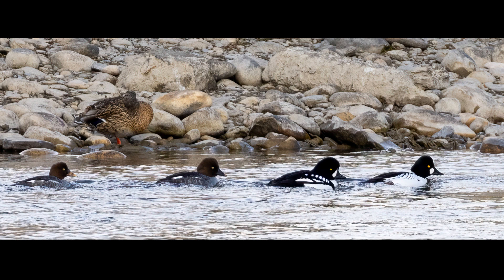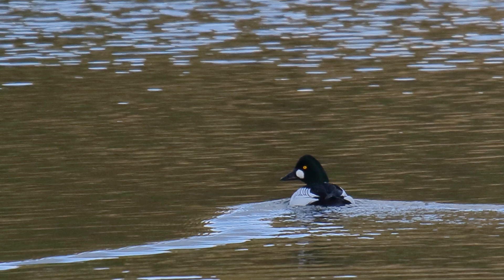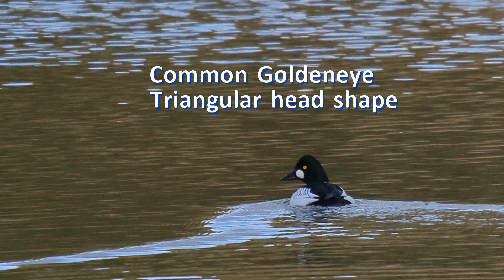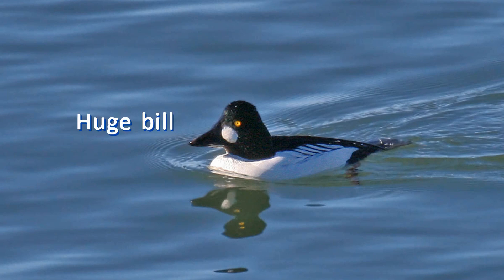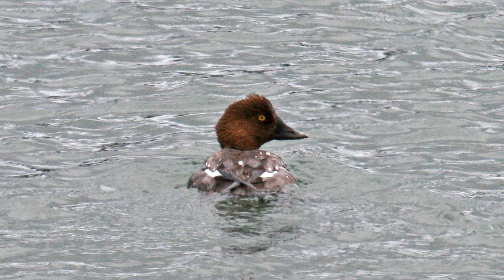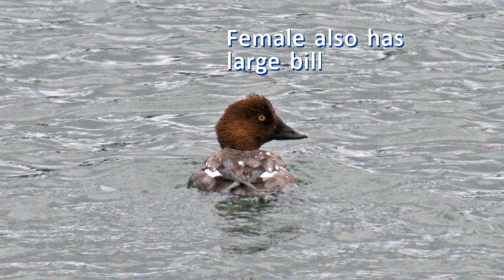Do you see the difference in the shape of the heads? The common goldeneyes have triangular shaped heads. The head shape appears to be a triangle with rounded points — the points are the bill, top of the head, and back of the head. And look at the size of that bill — it's just huge. This triangular head shape and large bill is also shown by the female.